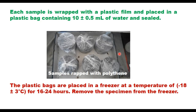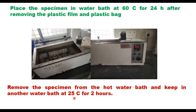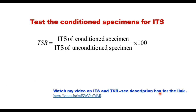Each sample is wrapped in plastic film, placed in a plastic bag with about 10 ml of water, and sealed. The bags are placed in a freezer at −18 ± 3°C for 16–24 hours. Then remove specimens from the freezer, remove the plastic film and bag, and place in a water bath at 60°C for 24 hours. Then transfer to another water bath at 25°C for 2 hours. Test the conditioned specimens for indirect tensile strength (ITS). TSR = ITS of conditioned specimens / ITS of unconditioned specimens.